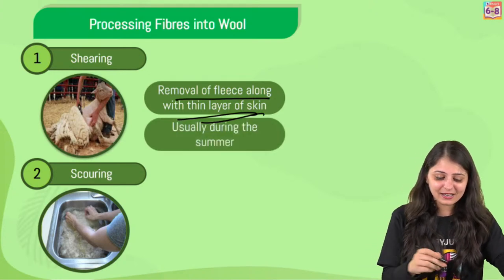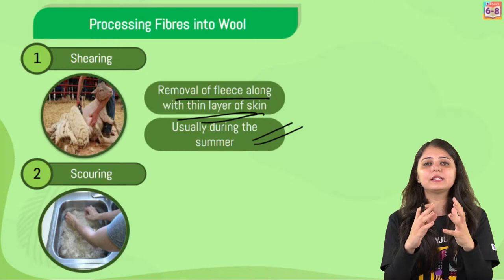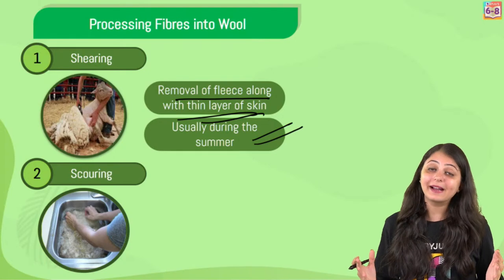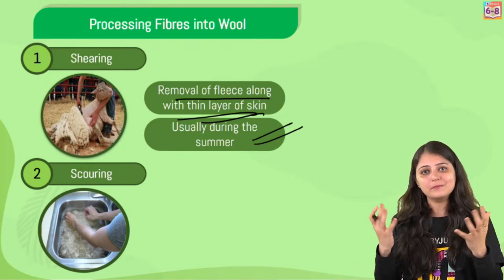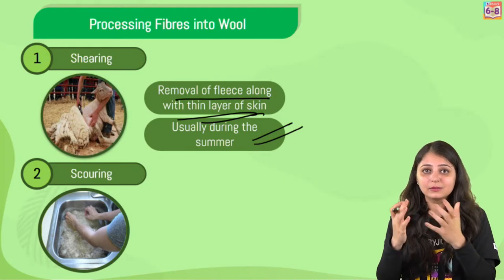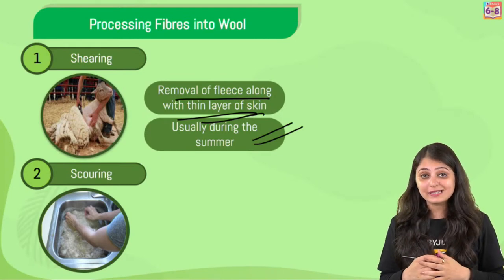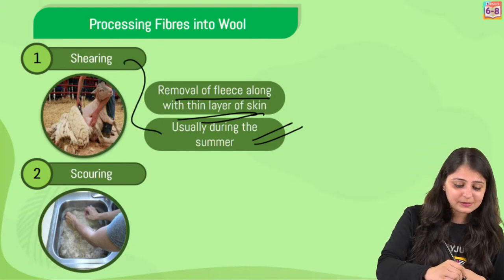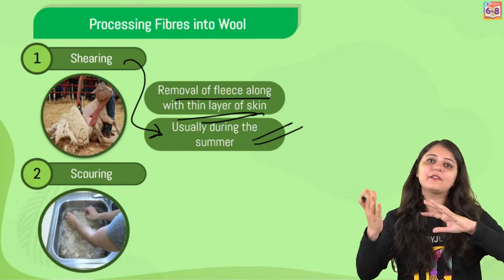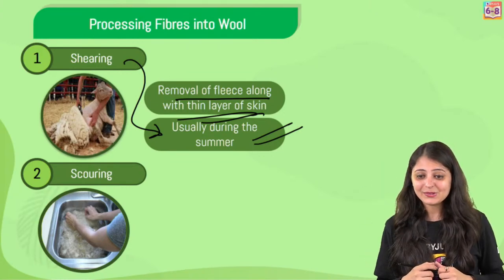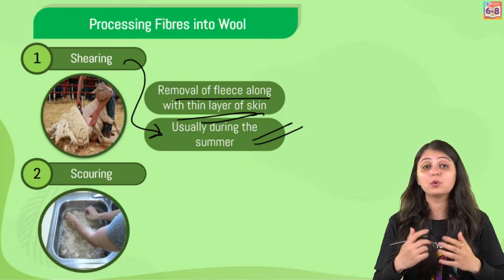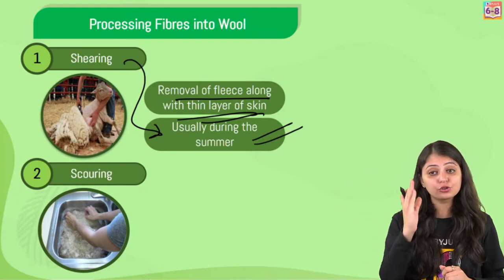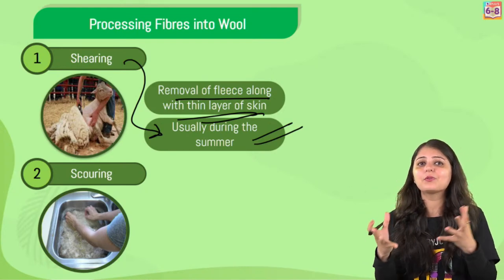Shearing is usually done in summers. All these animals have a thick coat of hair that traps a lot of heat, and hair is a bad conductor of heat, so all the heat would remain near the body of the animal. Because of this, in summers they will be very uncomfortable - that is why shearing is done in summers. In winters they definitely require that thick coat around them. This can be a question in the exam - 'why is shearing done in summers?' You should know that in summers they don't require that kind of warmth.